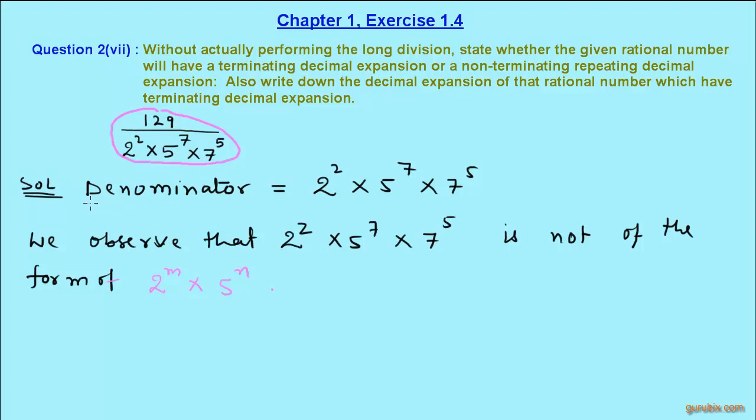First we have to collect the denominator and we see that the denominator is 2 raised to 2 multiplied by 5 raised to 7 multiplied by 7 raised to 5.